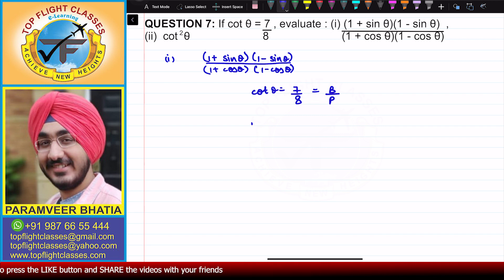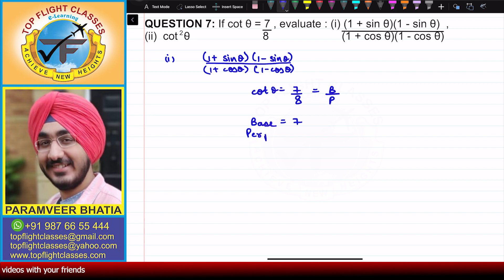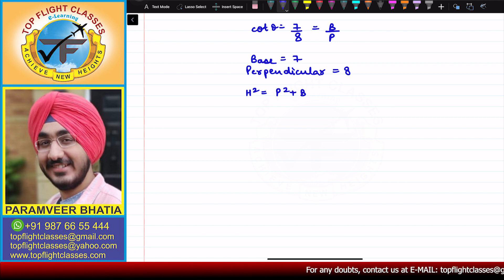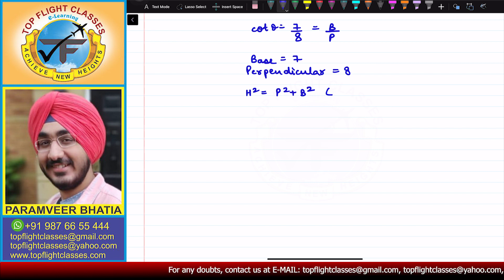So in this case, the base is equal to 7 and the perpendicular is equal to 8. To find the hypotenuse, I will write h² = p² + b² — that is, hypotenuse squared equals perpendicular squared plus base squared. This is by the Pythagoras theorem.